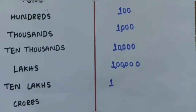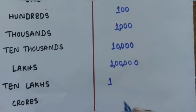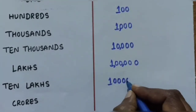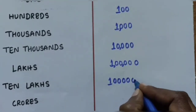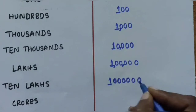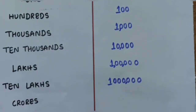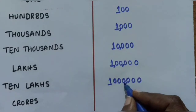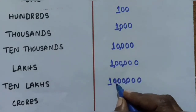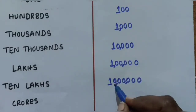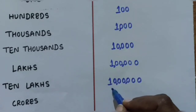Next is Ten Lakhs, written as 10,00,000 - that is one followed by six zeros. The first comma is applied after 3 digits from the right, and the second comma is applied after another 2 digits, giving: Units, Tens, Hundreds (1st comma), Thousands, Ten Thousands (2nd comma), Lakh, Ten Lakh.